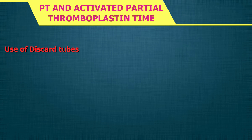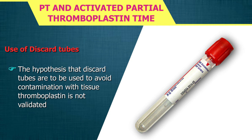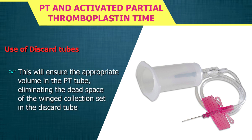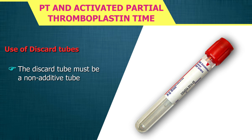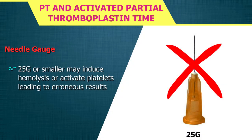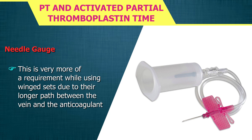The hypothesis that discard tubes are used to avoid contamination with tissue thromboplastin is not validated. However, while using a winged collection set, if the coagulation tube is the first tube drawn, use a discard tube first. This ensures the appropriate volume in the PT tube, eliminating the dead space of the winged collection set. The discard tube must be a non-additive tube. A 19–21 gauge needle is recommended by CLSI to avoid hemolysis. A 25 gauge or smaller may induce hemolysis or activate platelets, leading to erroneous results, especially with winged sets due to their longer path to the anticoagulant.